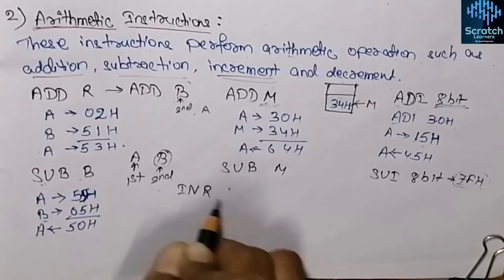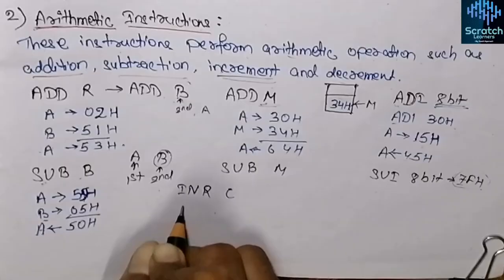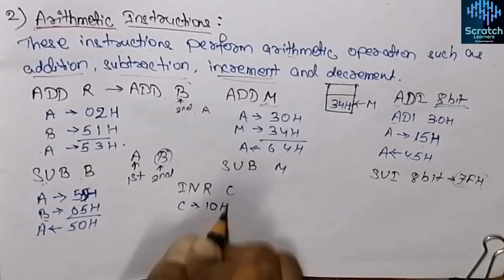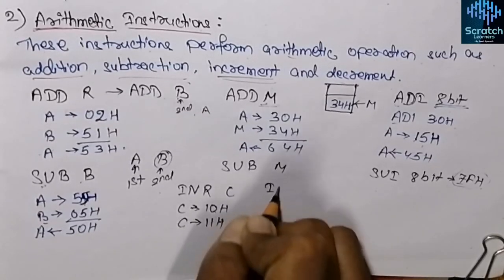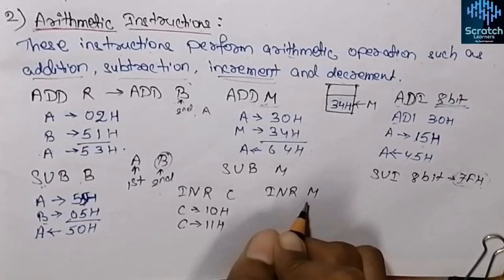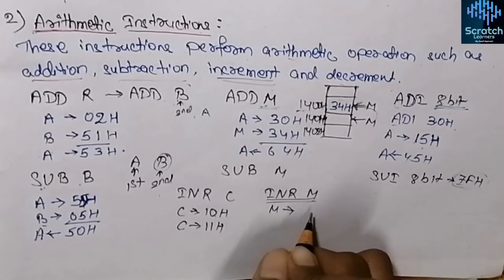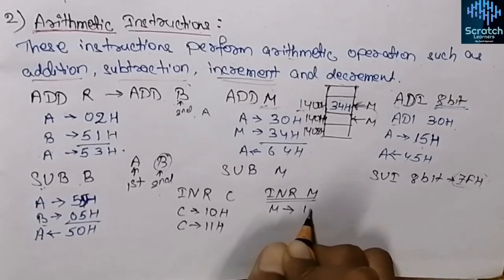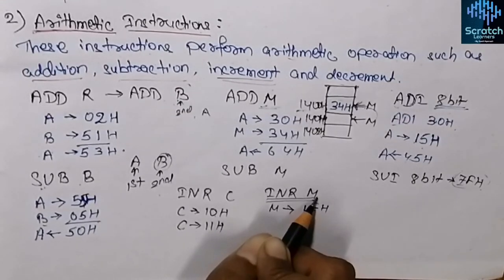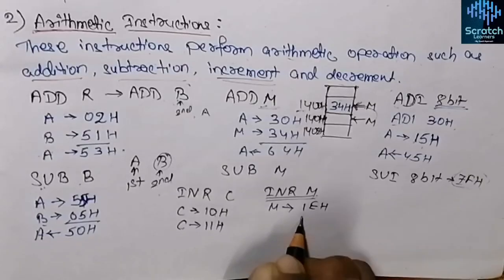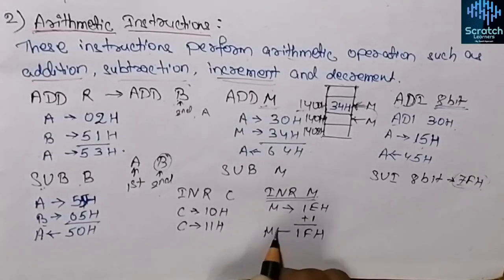For increment, the INR instruction increments a register's content. For example, INR C — if register C contains 10H, the updated value will be 11H. INR M increments the content of the memory location pointed by the HL pair. For example, if memory contains 1EH, after executing INR M the updated content will be 1FH.